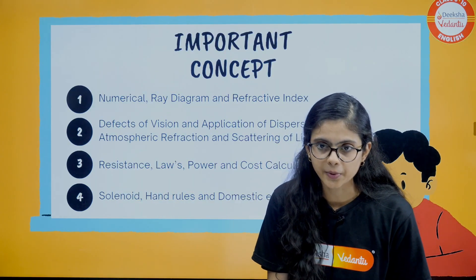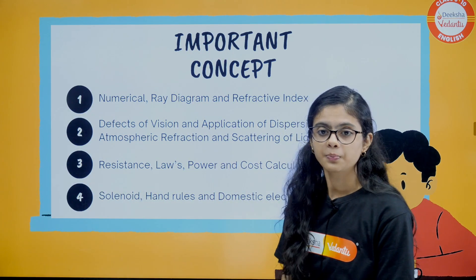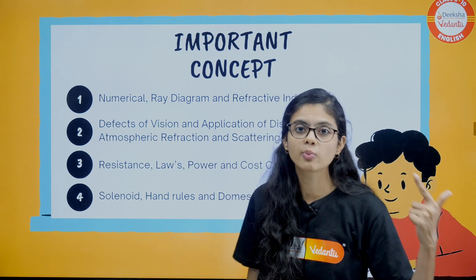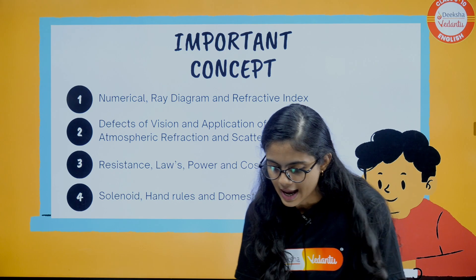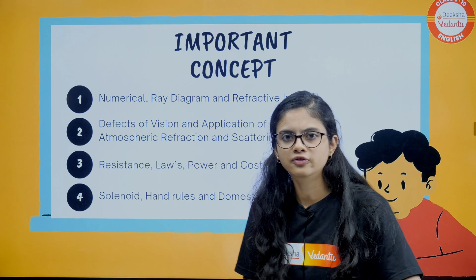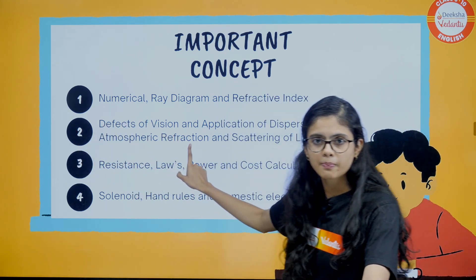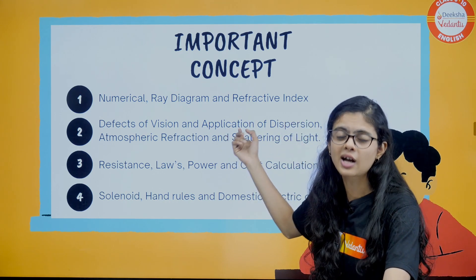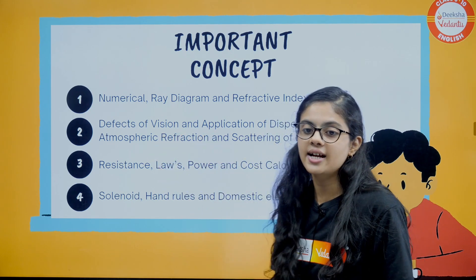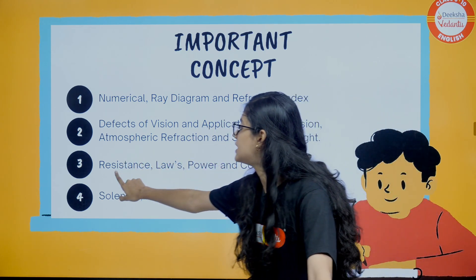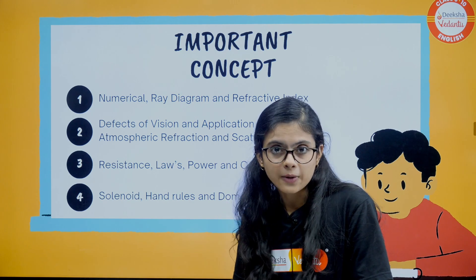Quickly giving you a glance of your paper — analyzing everything, what are the important topics from each chapter? Numerical: mirror formula, lens formula, magnification, power of lens — these are important. Ray diagrams are also extremely important; you can expect ray diagrams for three to four marks, maybe in Section C or D. From human eye, defects of vision is important. Then applications of dispersion, atmospheric refraction — why the sky is blue, why stars twinkle, early sunrise and delayed sunset, scattering of light — these topics are important. For resistance: series combination, parallel combination, and the formula R = ρL/A.